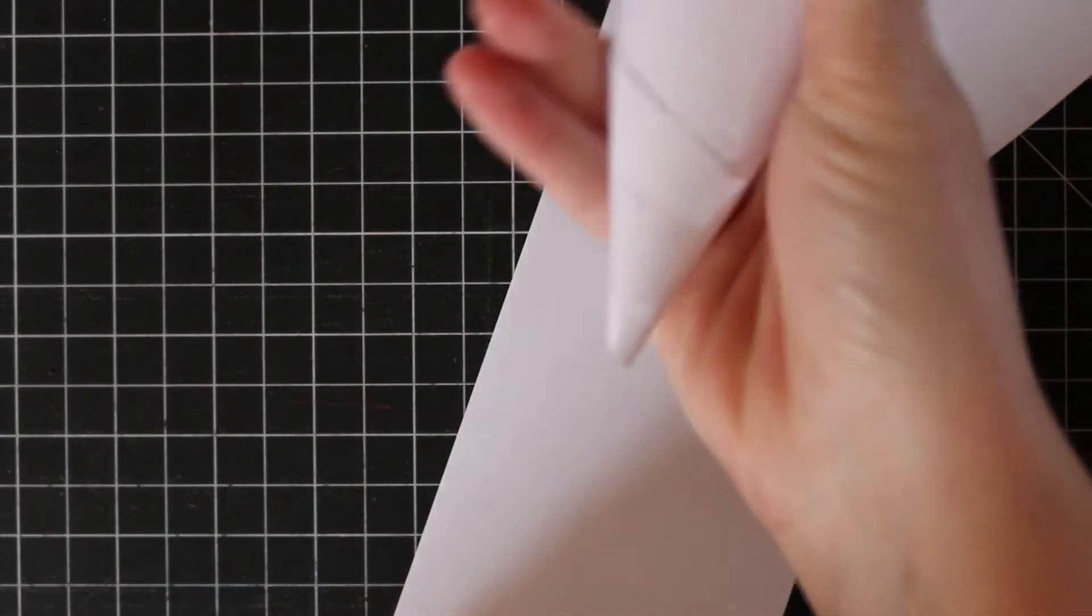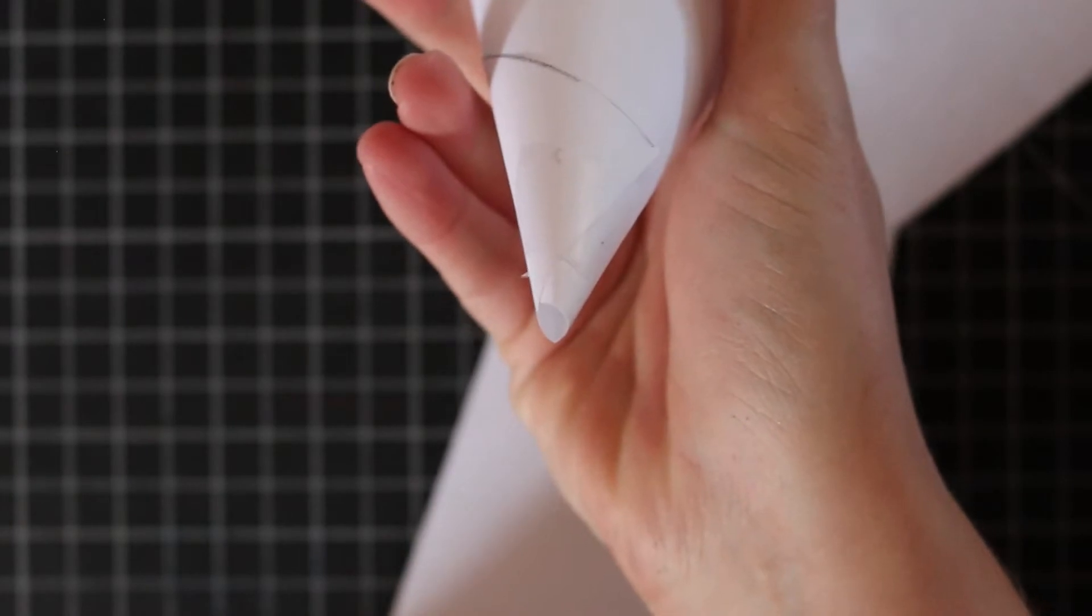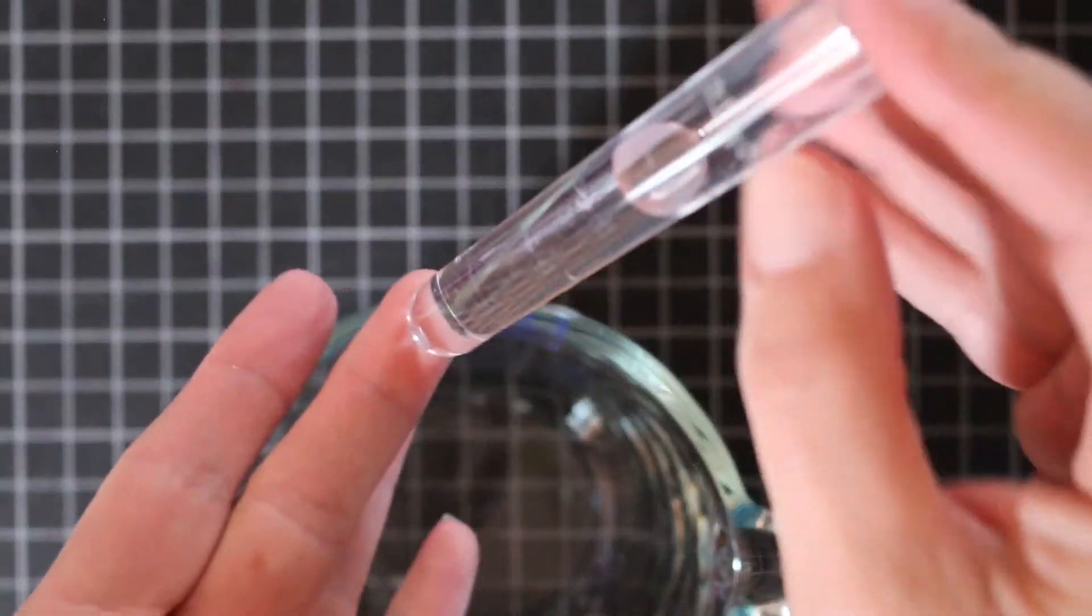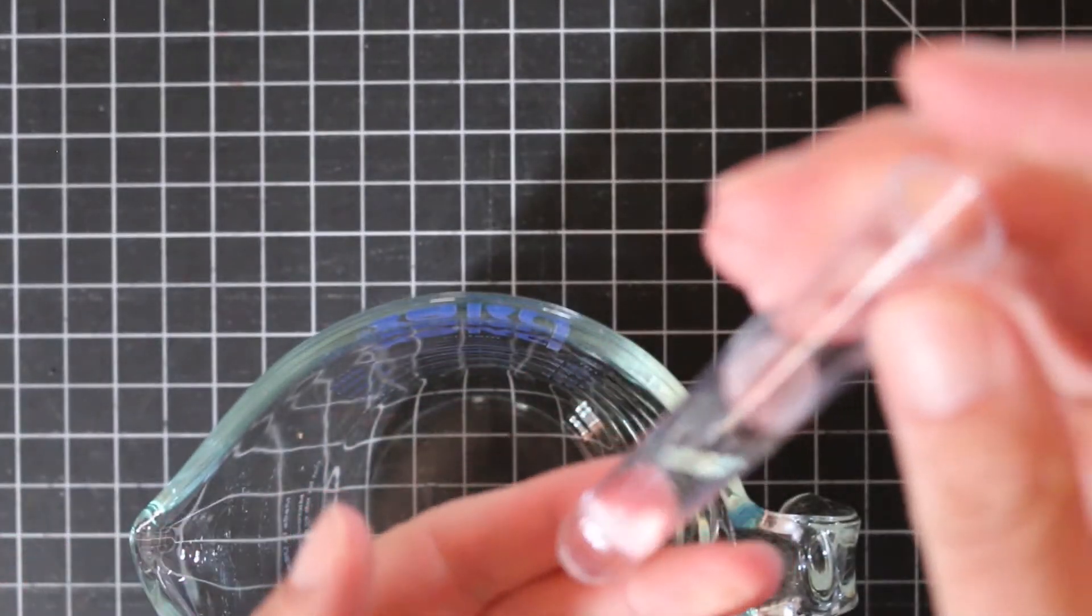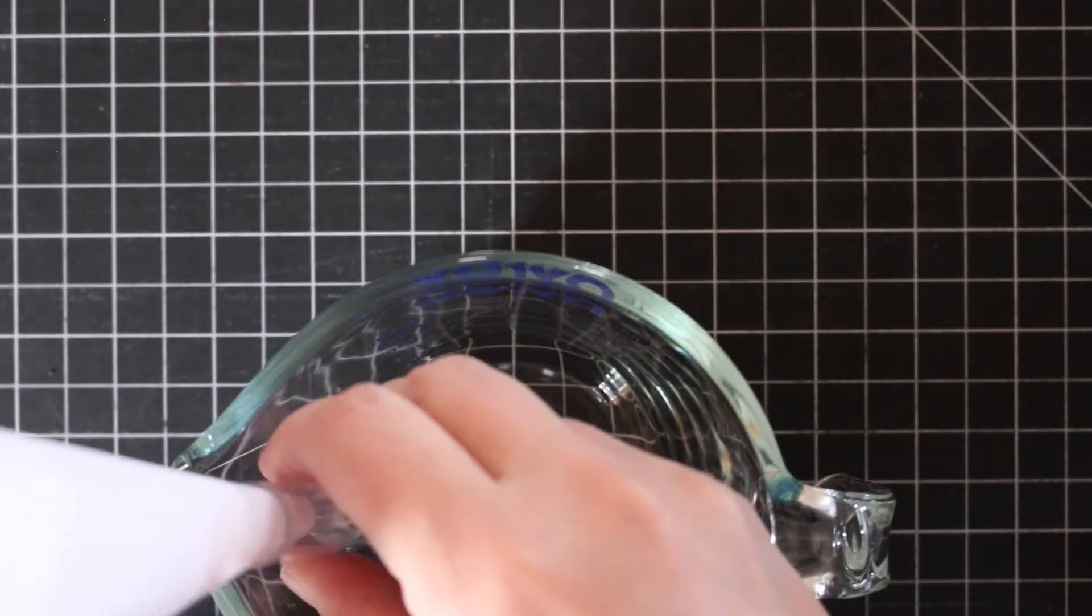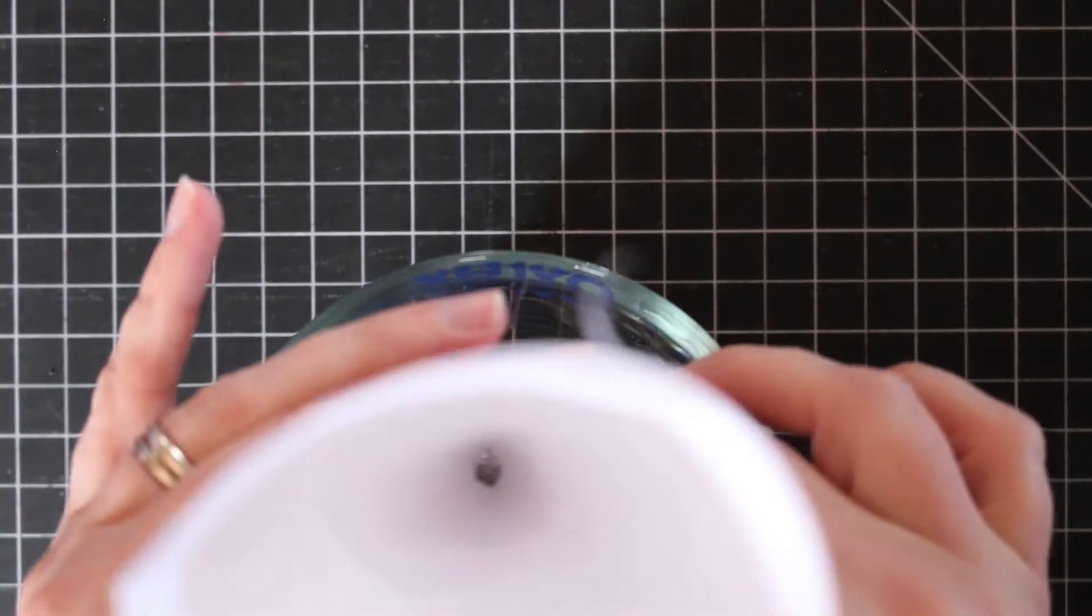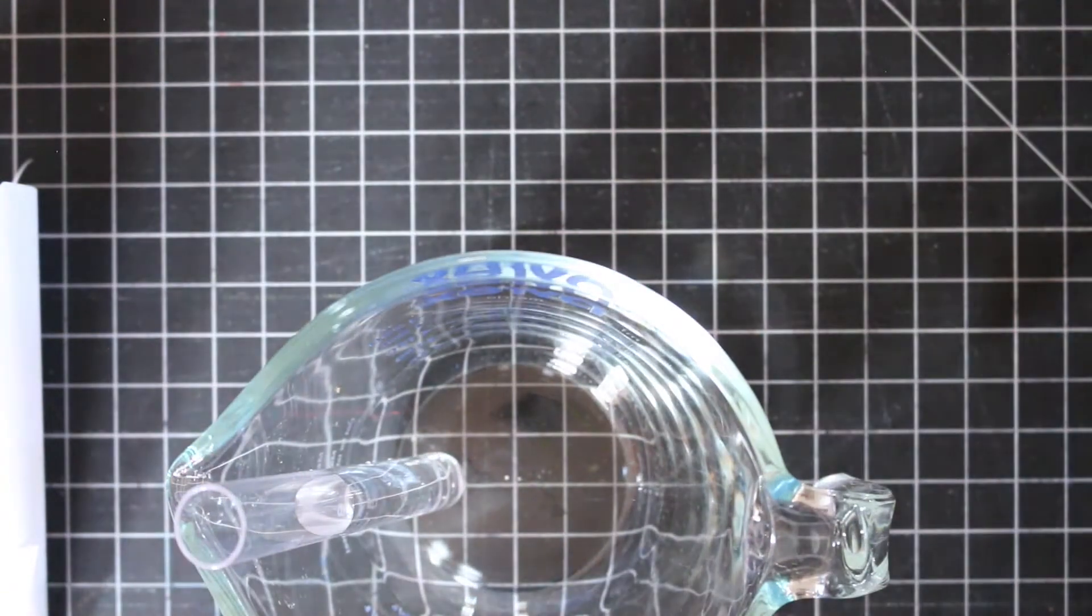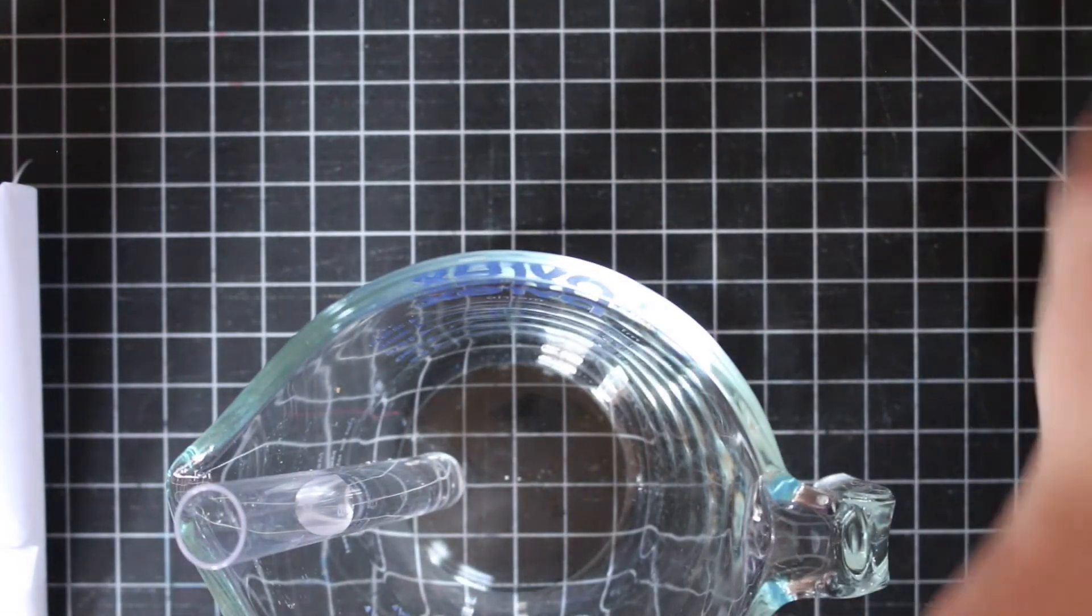And so I have a little homemade funnel for getting my iron filings into my test tube. My test tube is already about two-thirds full of water, up to between the six and eight milliliter mark. I'm going to set it up, set my funnel into it, and pour about a teaspoon of iron filings into my test tube.